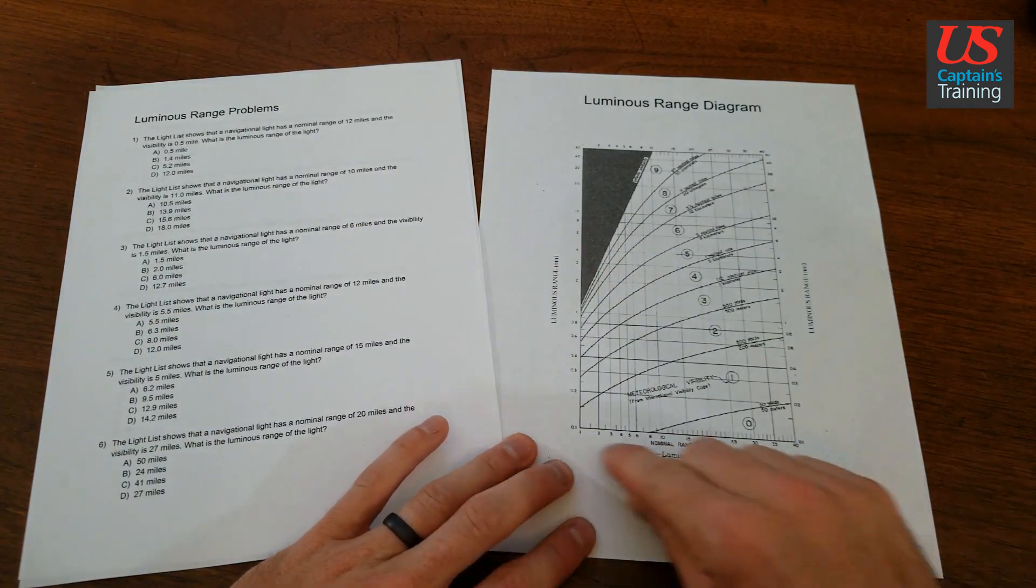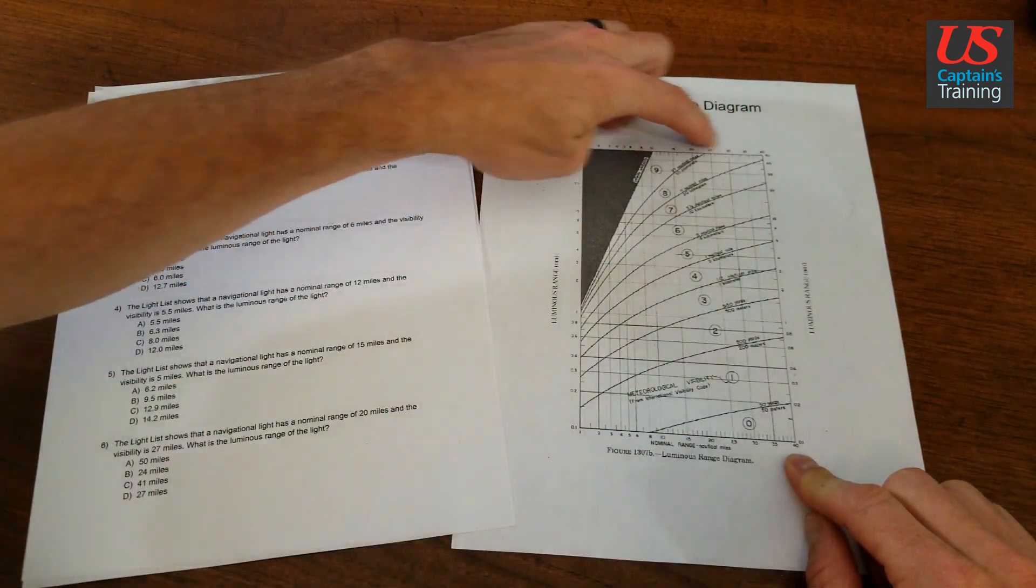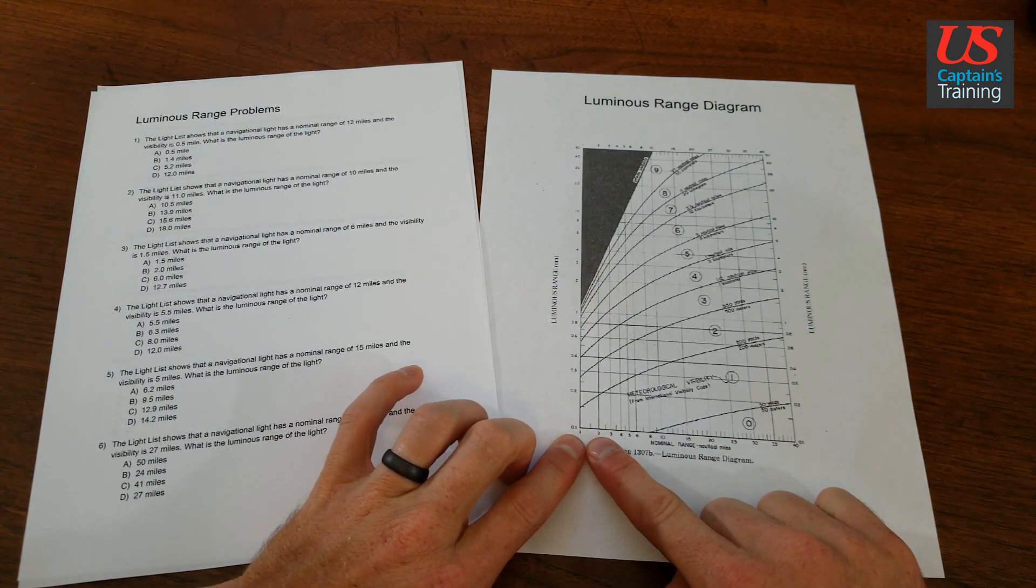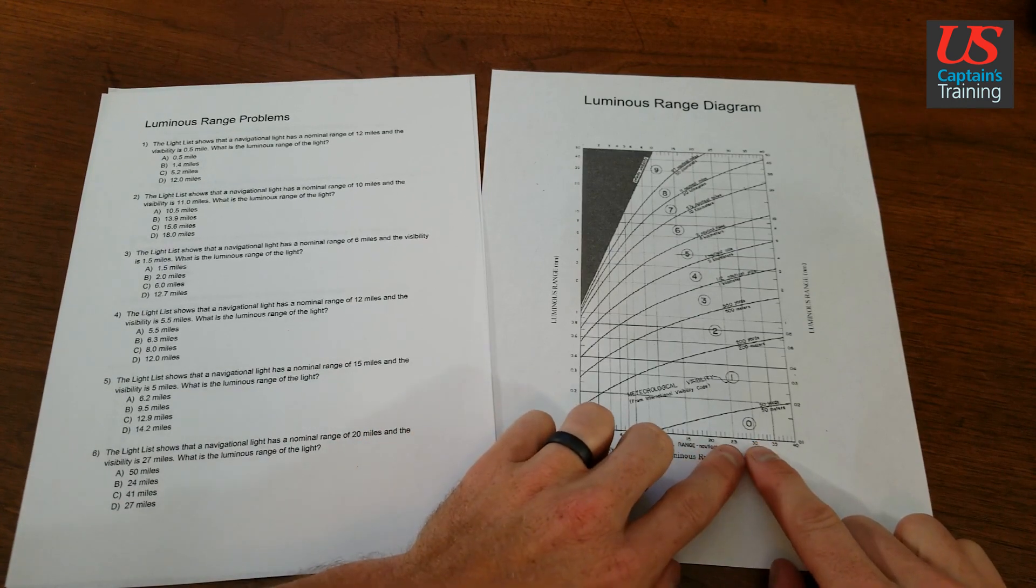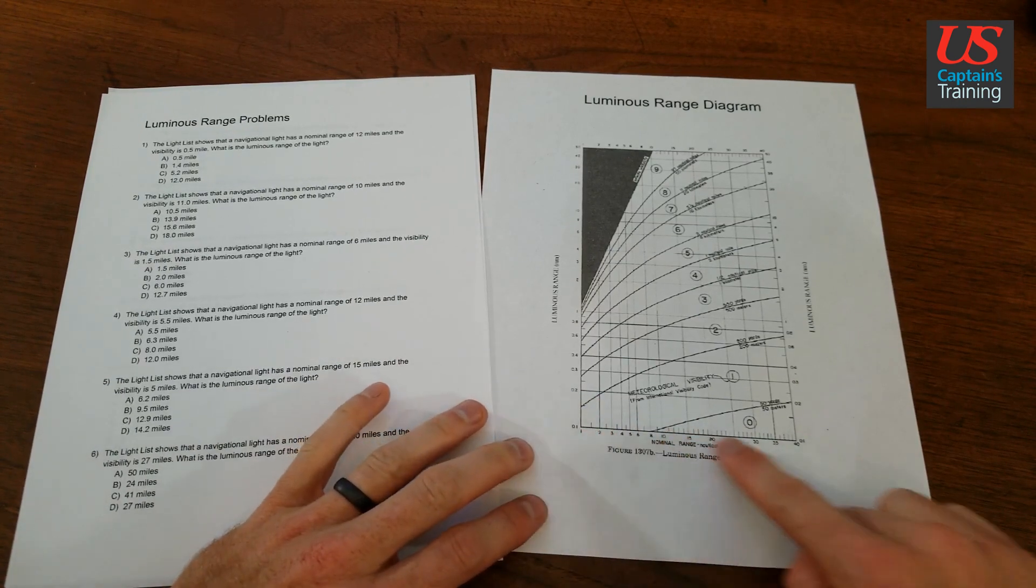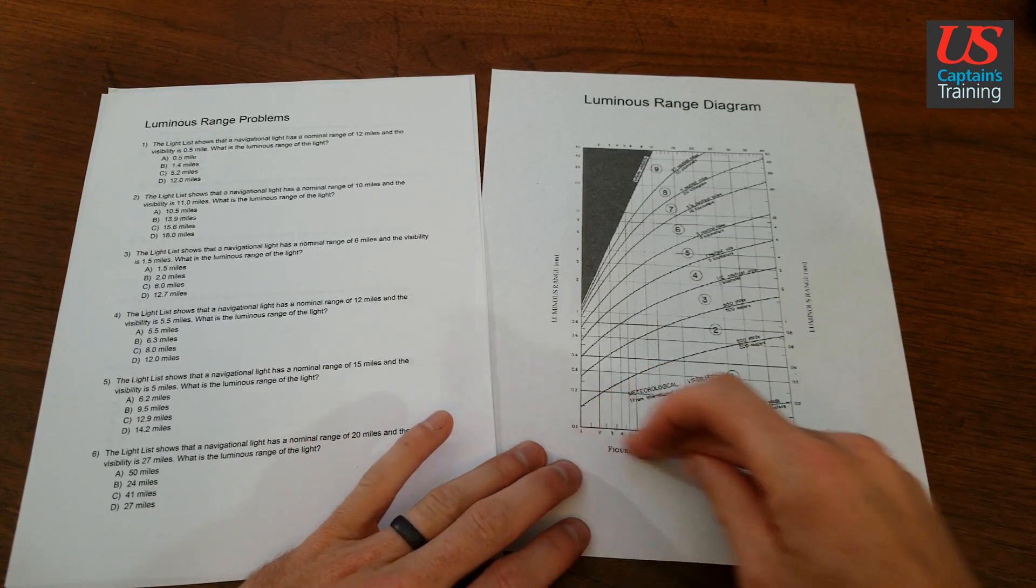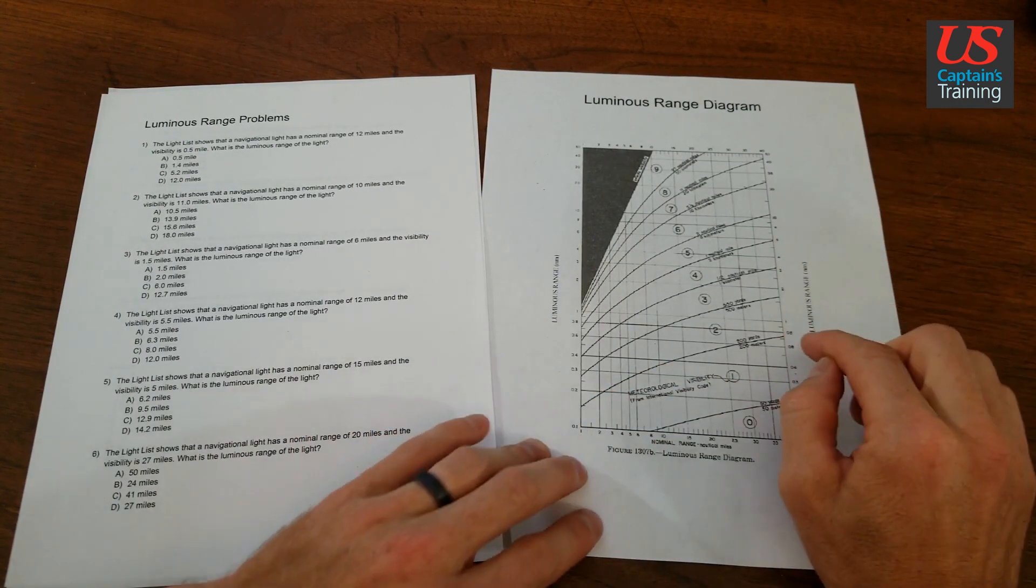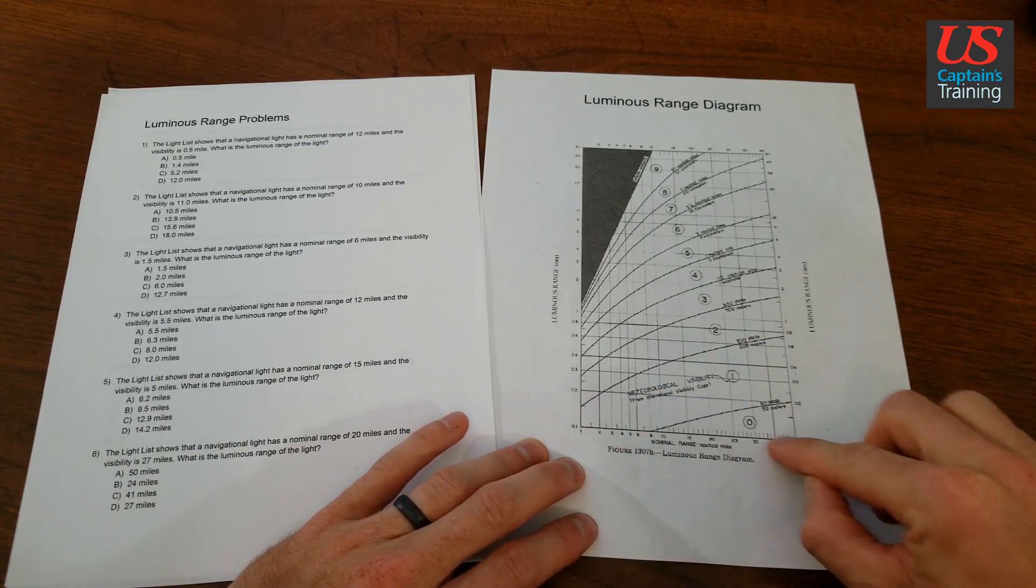So nominal ranges are here on the bottom and here on the top. You'll notice the scale is different. Like the distance between 1 and 2 is about the same as over here between 25 and 30. It's a logarithmic scale, both on the x and y axis.